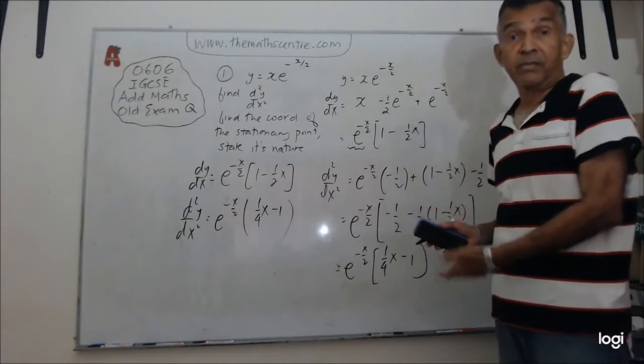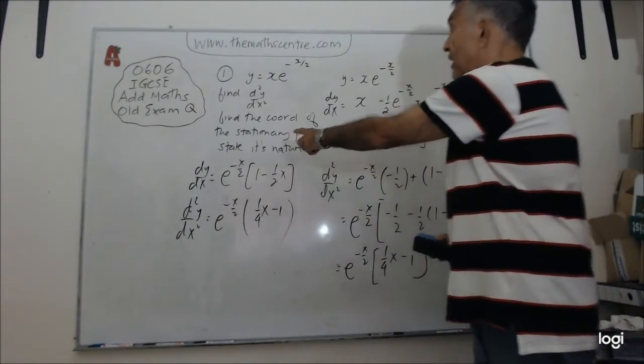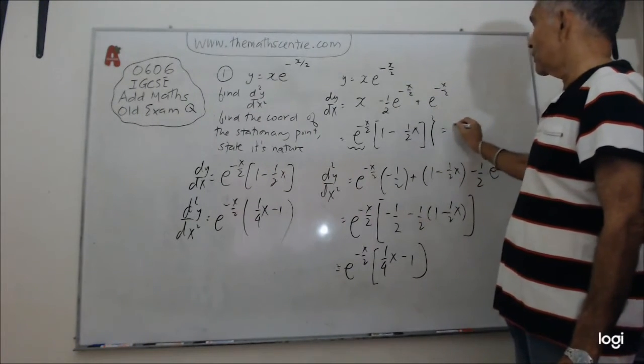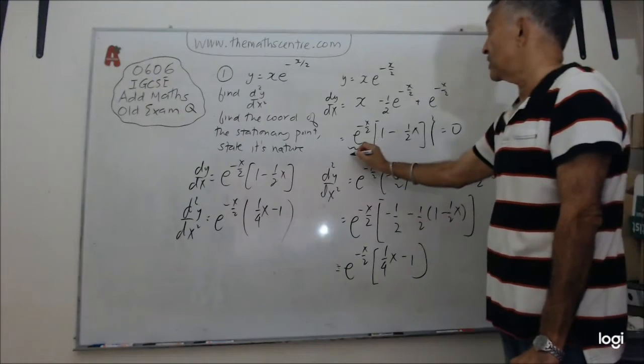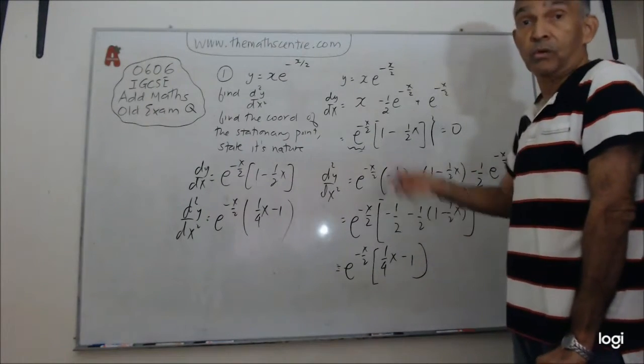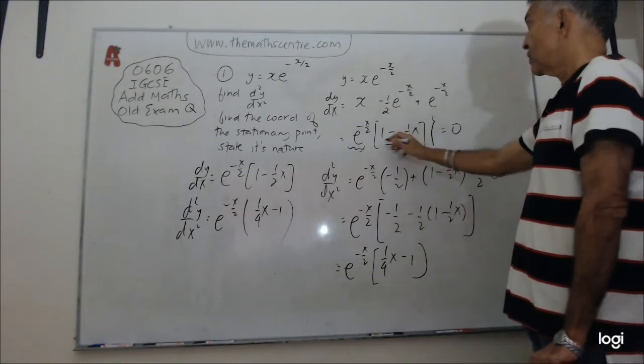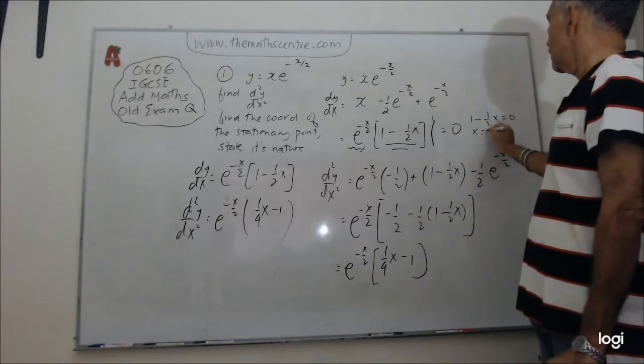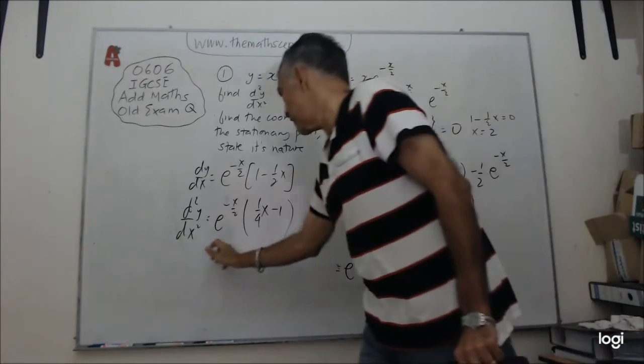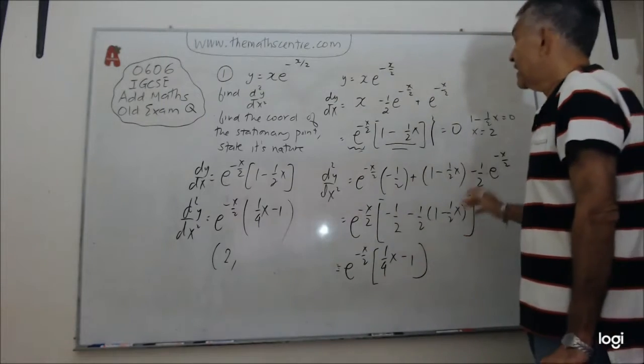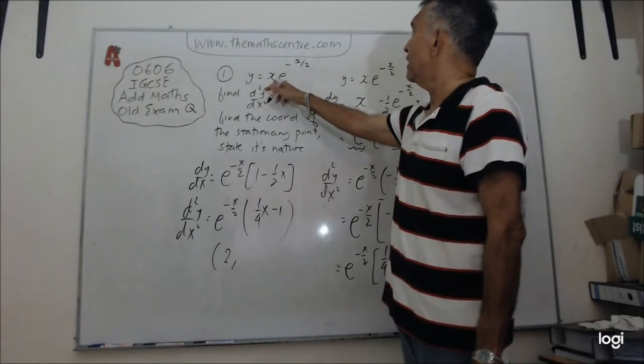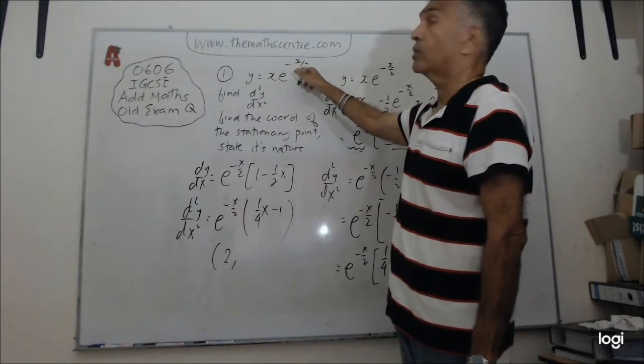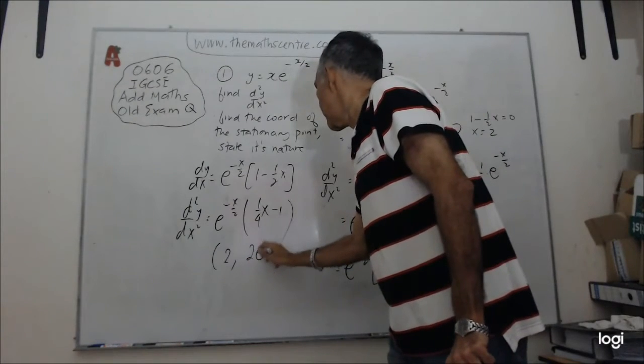So now we can move a little bit faster. We've got all things that we need. And we are asked to find the coordinates of the stationary point. So we need to set this one here equal to 0. Set this equal to 0. This can't be 0. This is an exponential function, it's always positive. So this has to be 0. So when you set this equal to 0, what do you get? 1 minus half x equals 0. So x equals 2. So you know the x value is 2. And then we need the coordinates. So I need to plug that in here. So I have the y value of 2 times e to the power of minus 2 over 2 is minus 1.